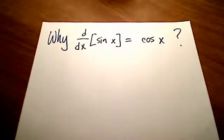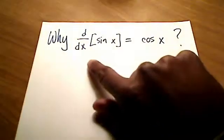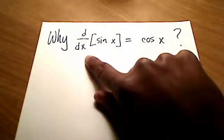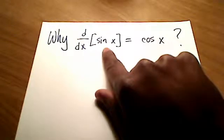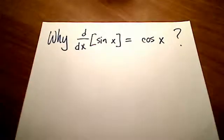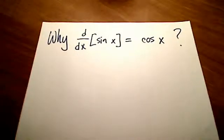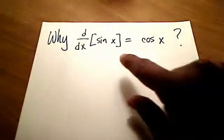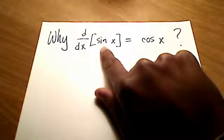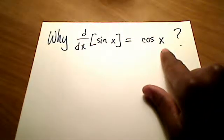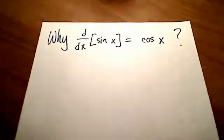In this video I want to show you and kind of answer this question with a proof as to why the derivative of sine is equal to cosine. And you can do the same exact proof, or a very similar one, for why the derivative of cosine is equal to negative sine.